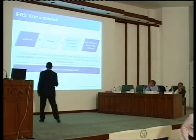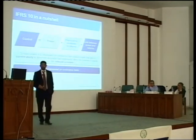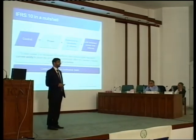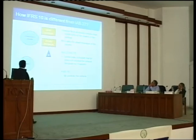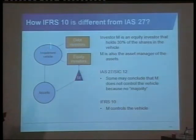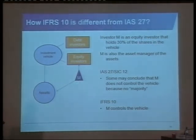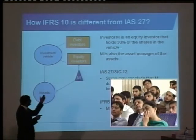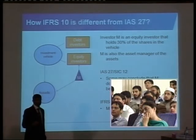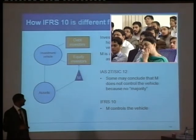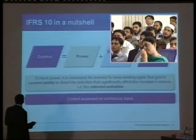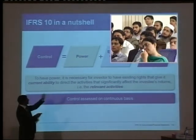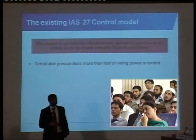IFRS 10 also changes that control is assessed on a continuous basis. At some points in time you may not control, and sometimes control may change. For example: you've got debt investors and equity investors investing in an investment vehicle that goes and invests in assets. M holds 30% of the shares and is also the asset manager. Under IAS 27 and SIC-12, we'd say 30% — you don't have the majority, so you don't consolidate. But applying IFRS 10, you ask: do you have power over the relevant activities? Do you have exposure to variability in returns? Is there a link between your power and returns? In most cases, you would be consolidated.